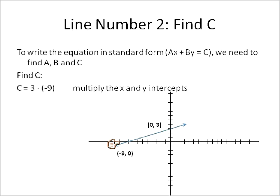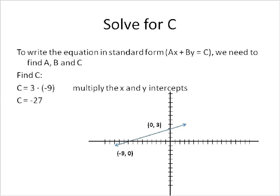Let's look at another line. This line passes through the x-intercept of negative 9, 0, and our y-intercept of 0, 3. It's a very different looking line, but we're going to solve it exactly the same way. We're going to use exactly the same steps for writing the equation of this line. The first step is to find the value for C. To find the value for C, we multiply the x and y intercepts. So 3 times negative 9, and that will give us a total of negative 27. So C is equal to negative 27.